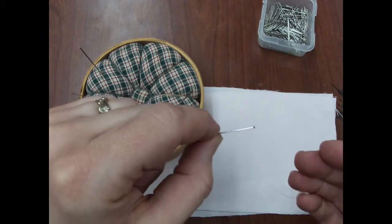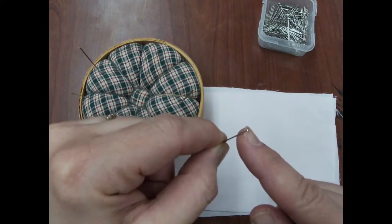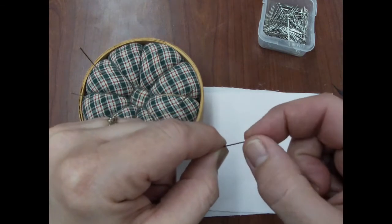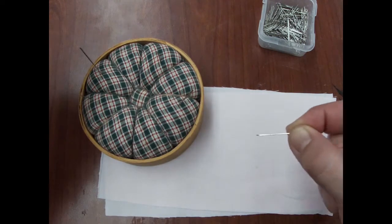So a pin has a pin head, kind of like the head of a nail, on one side for grasping, and it's got a point on the other side to get through the fabric.